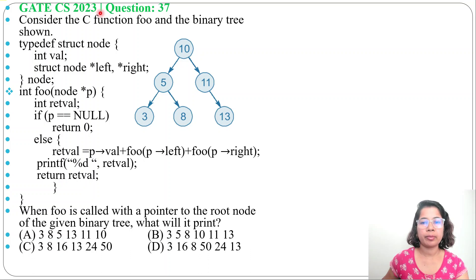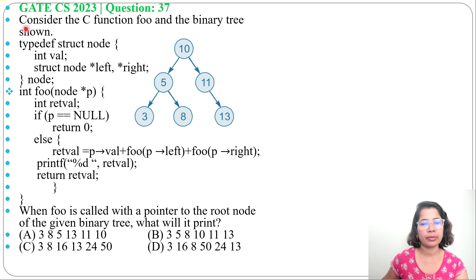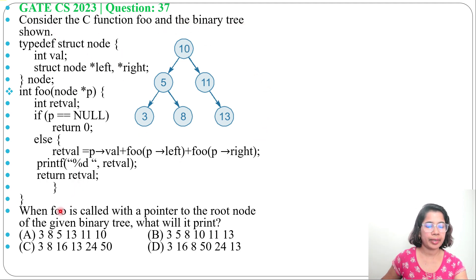Let's solve one previous question of tree data structure. This question was asked in GATE CH 2023, question number 37. Consider the C function foo and the binary tree shown. When foo is called with a pointer to the root node of the given binary tree, what will it print?